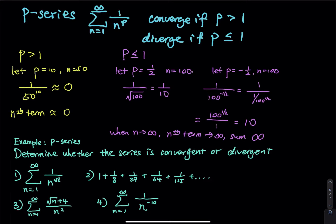What about p less than or equal to 1? If you pick a value between 0 and 1, that's not too obvious. Say p equals 1/2 and n equals 100. You have 1 divided by the square root of 100, which equals 1 over 10. That doesn't look like divergent. But 1 over 10 is still not close to 0, so you are still adding up some serious quantities to the sum. That's why the series is divergent.